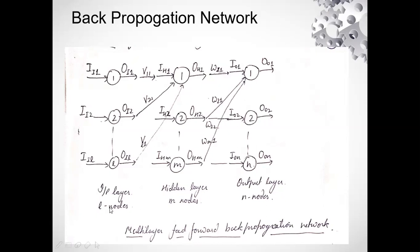In the input layer, we have L number of neurons, so we have L nodes. In the hidden layer, we have M number of nodes. In the output layer, we have N number of nodes. For the input layer, notations go from II1 to IIL and OI1 to OIL because we have L number of nodes. For the hidden layer, we have M number of nodes, so the neurons are h1, h2 till hM, with outputs OH1, OH2 up to OHM. For the output layer, we have N nodes, numbered from 1 to N.